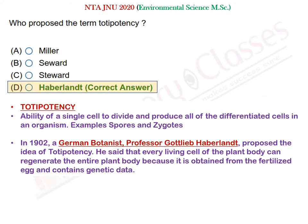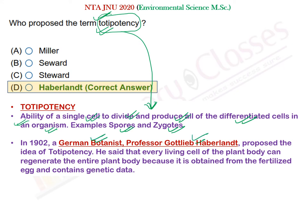The next question asks about totipotency. Totipotency is the ability of a single cell to divide and produce all differentiated cells in an organism. German botanist Professor Gottlieb Haberlandt proposed the idea of totipotency. He said that every single living cell of a plant body can regenerate the entire plant body because it contains the full genetic data present in spores and zygotes.